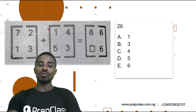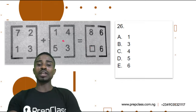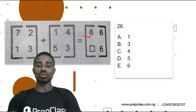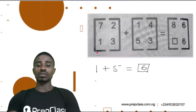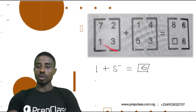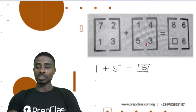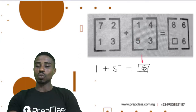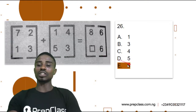Question 26. We have an empty space here which we need to fill. Going by the understanding we've gained: 7 plus 1 gives us 8, 2 plus 4 gives us 6, so 1 plus 5 would give us the answer here. Let's check: 1 plus 5 gives us 6, so 6 would be our answer, because 3 plus 3 also gives us 6. The answer is 1 plus 5 which equals 6. Option E — 6 is our correct answer.